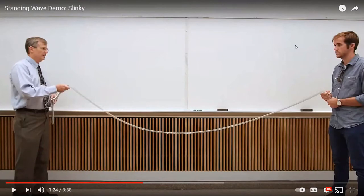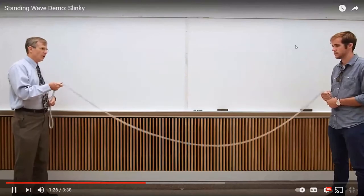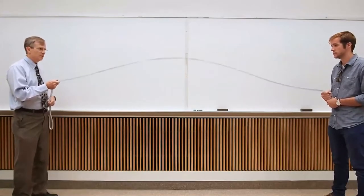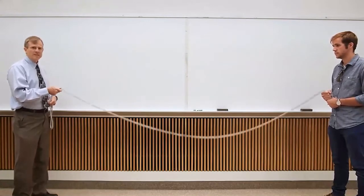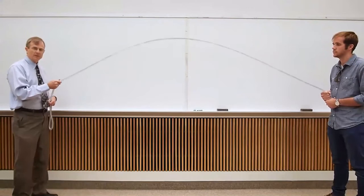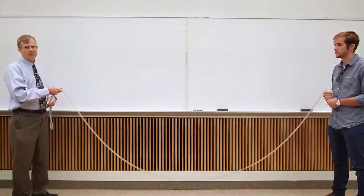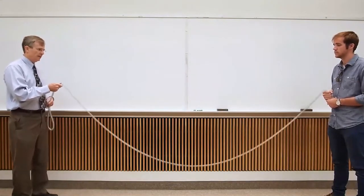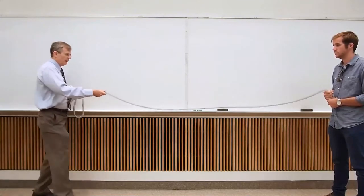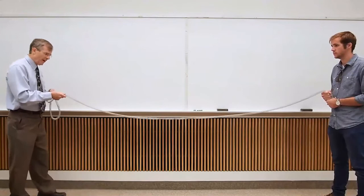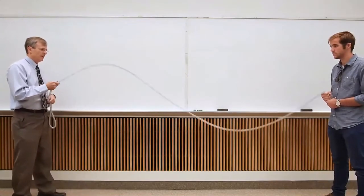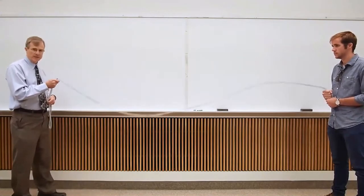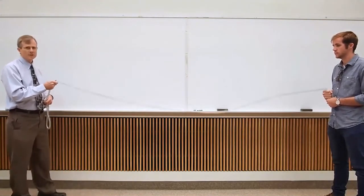The medium of the standing wave does not have to be a piece of string. It can be the air inside a musical instrument. Here's a demonstration with a slinky. The lowest frequency standing wave pattern is called mode 1, or the first harmonic, also called the fundamental mode — the lowest frequency mode you can get in a transverse standing wave. Doubling the frequency gives the second harmonic, or second mode, sometimes called the first overtone, and it oscillates twice as fast as the fundamental.